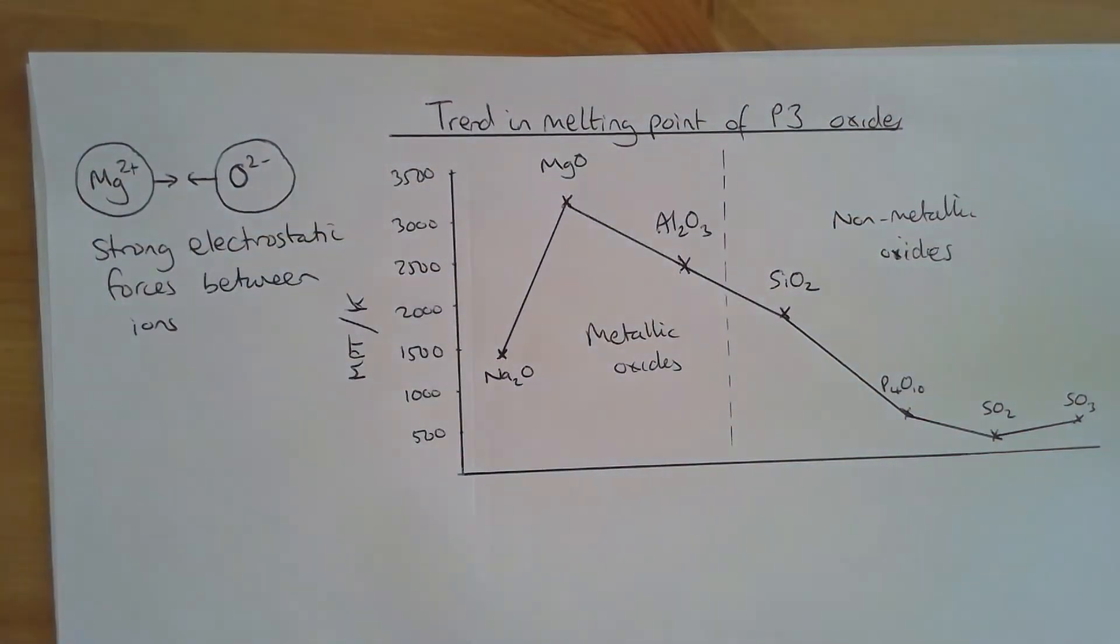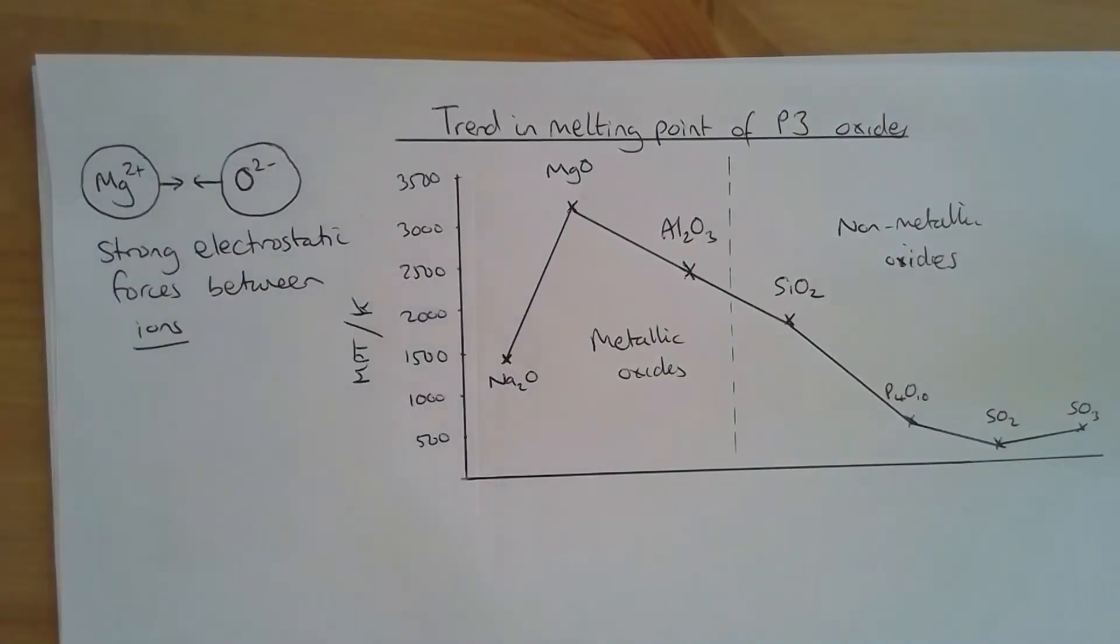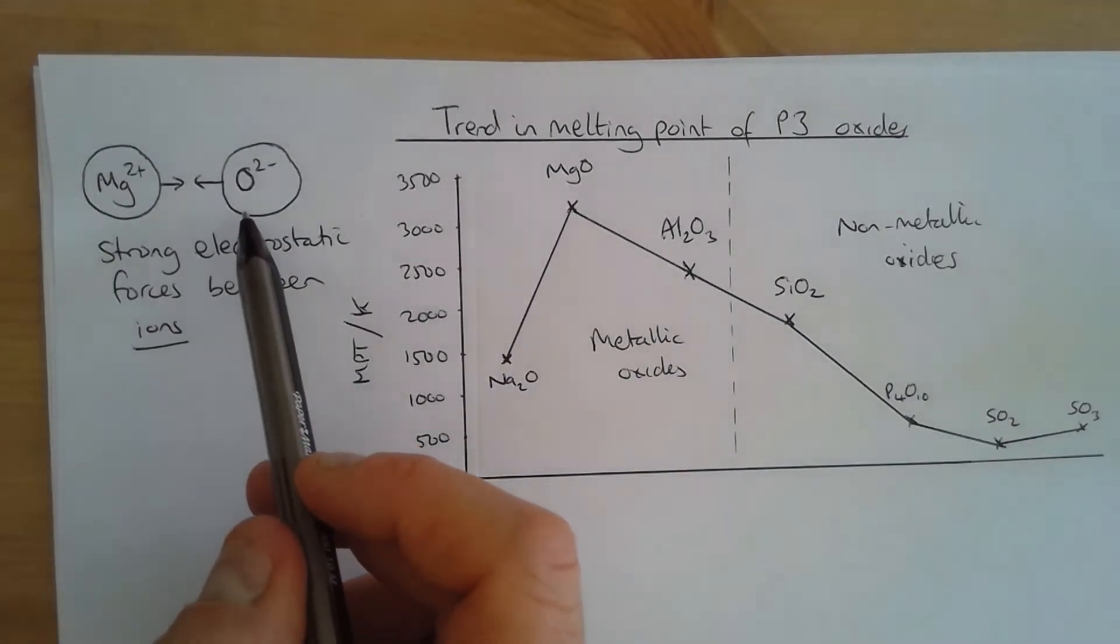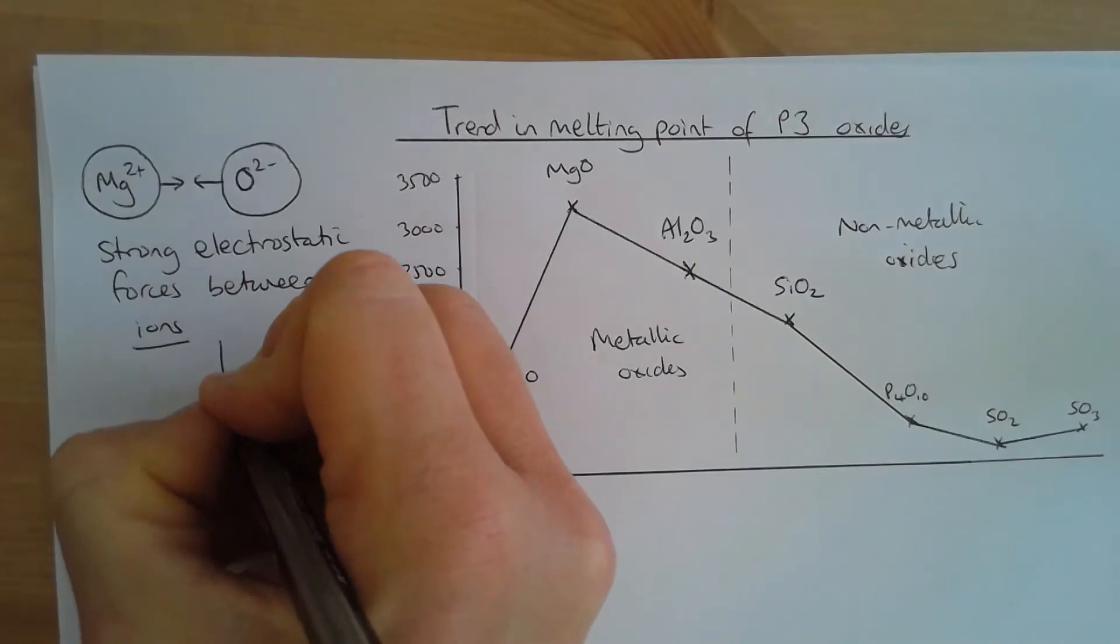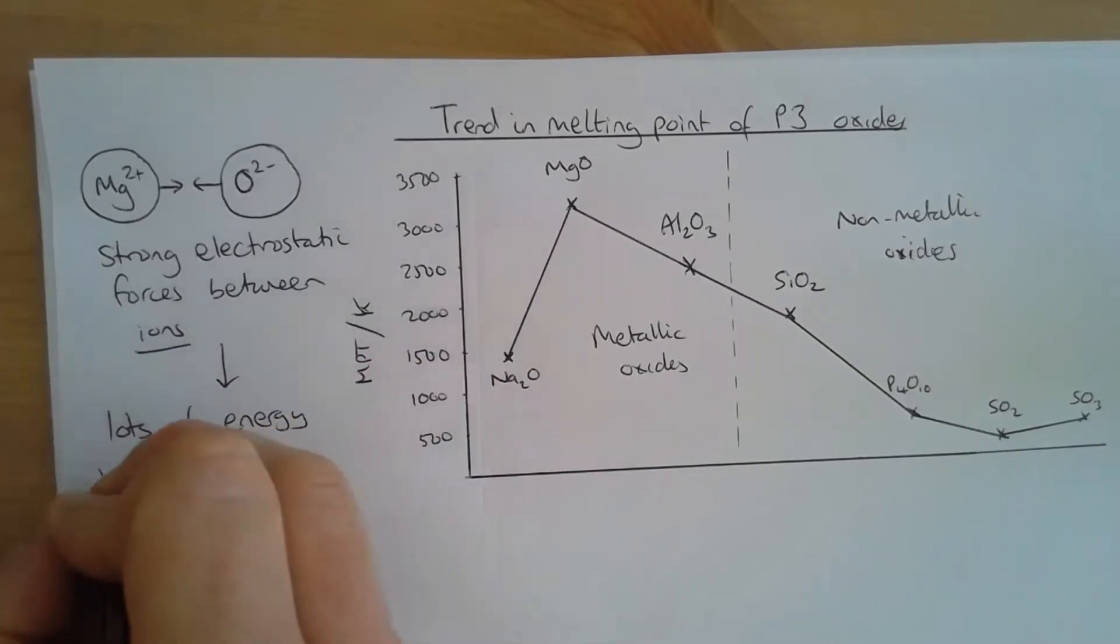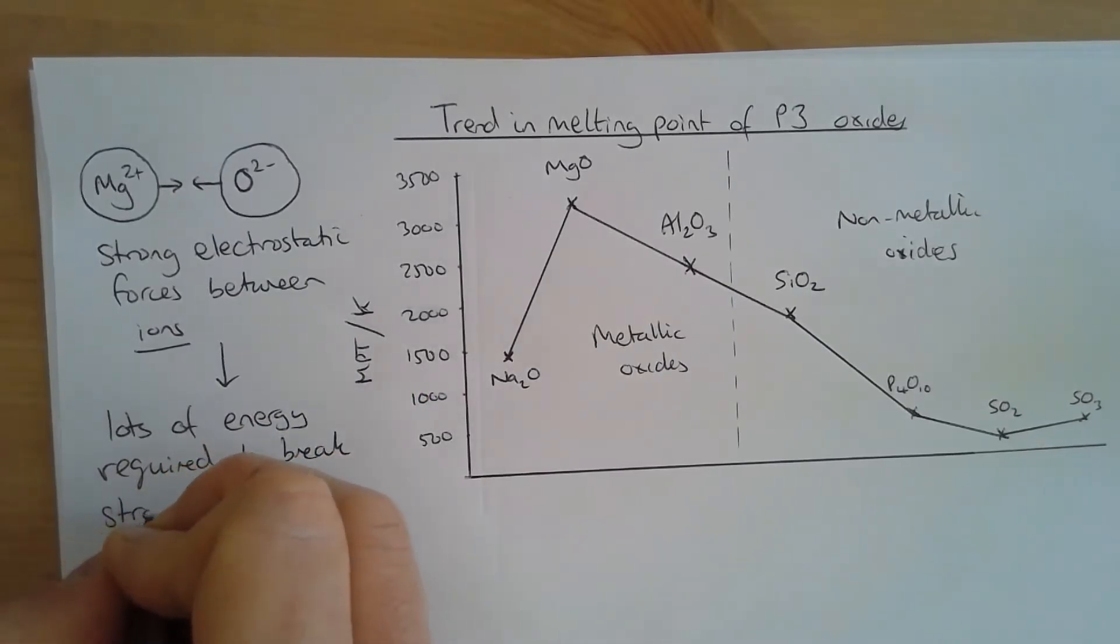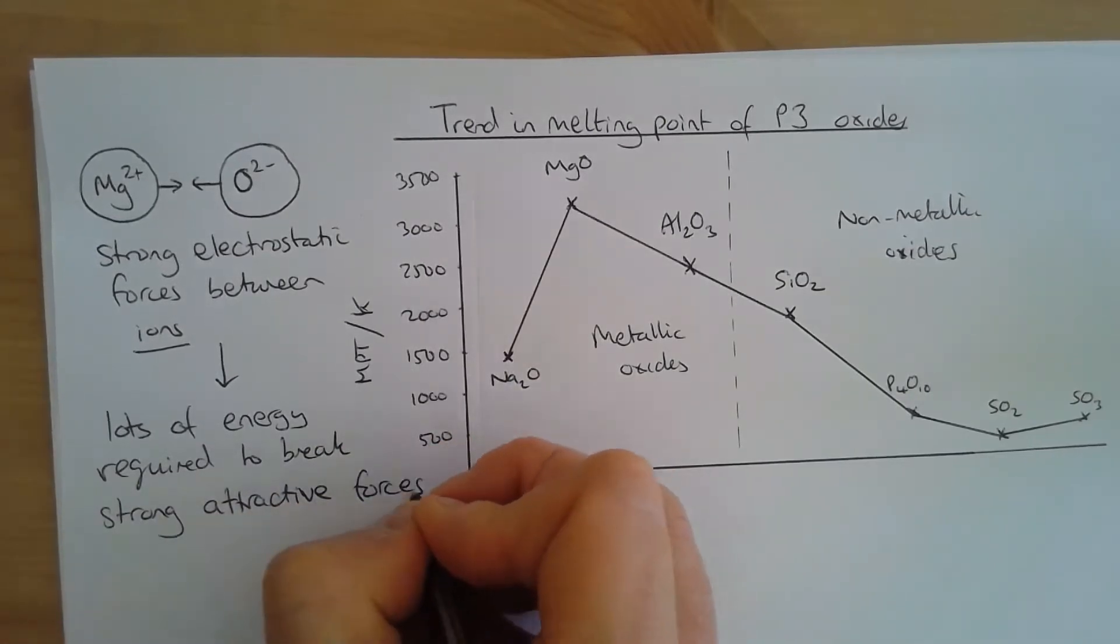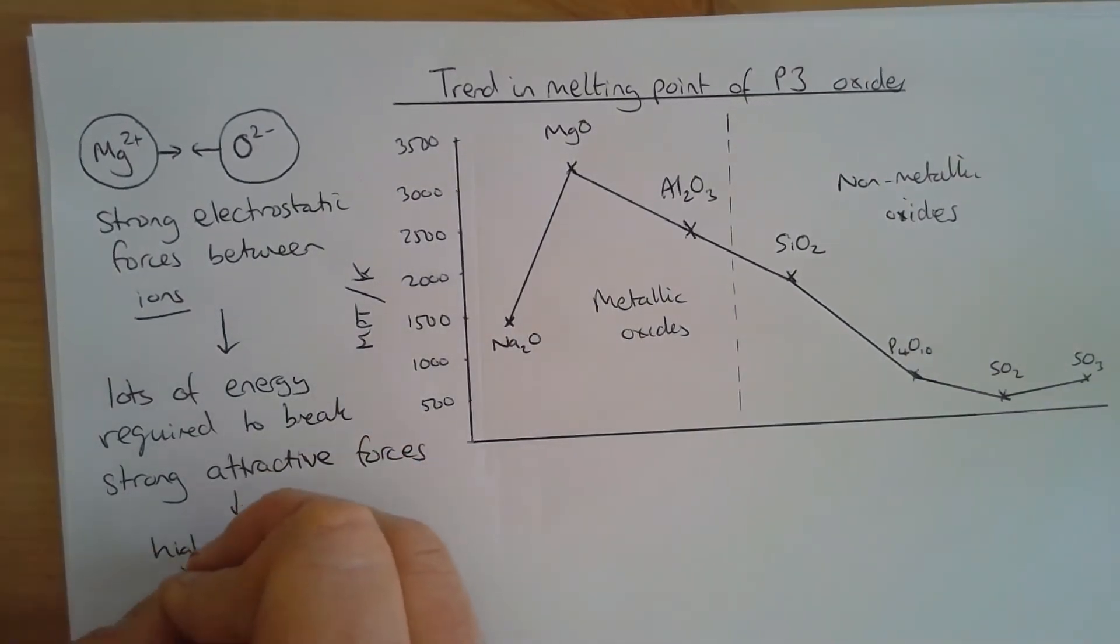Now, if you're talking about this, if you're writing about this, then we can use the word magnesium or we can use Mg2+. But we must state that it is an ion. We can use O2- or we can use oxide and we must state that that is an ion. It's very important that we don't say oxygen ion, oxide ion and magnesium ion. So as a result of these strong electrostatic forces, lots of energy is required to break the strong attractive forces. That means we're going to have very high melting points.